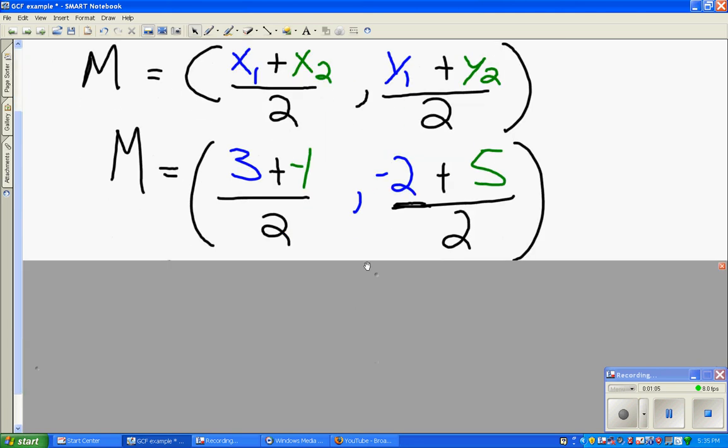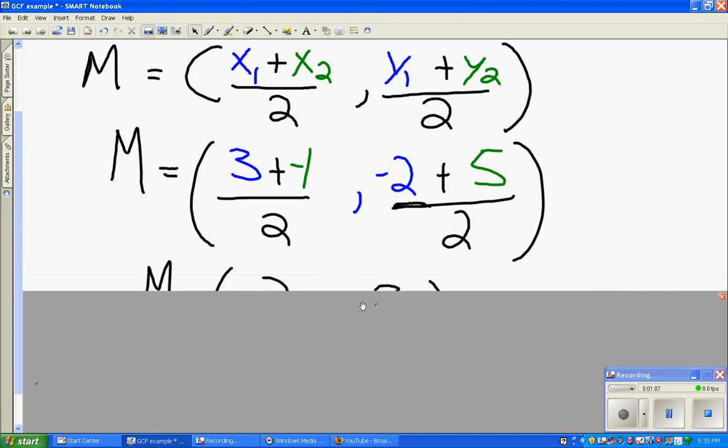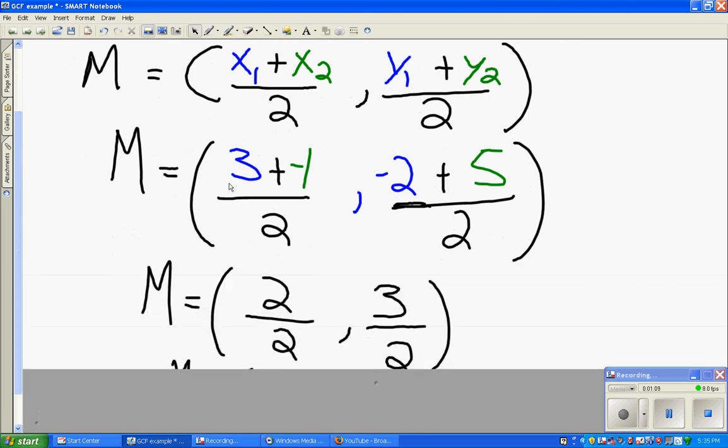I combine the numerators on both sides. 3 + (-1) = 2, divided by 2. -2 + 5 = 3, divided by 2.